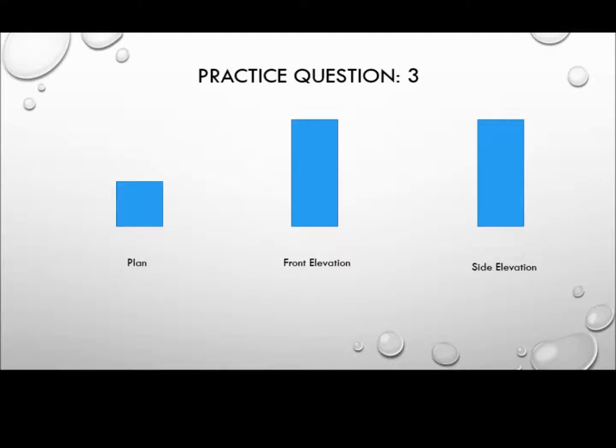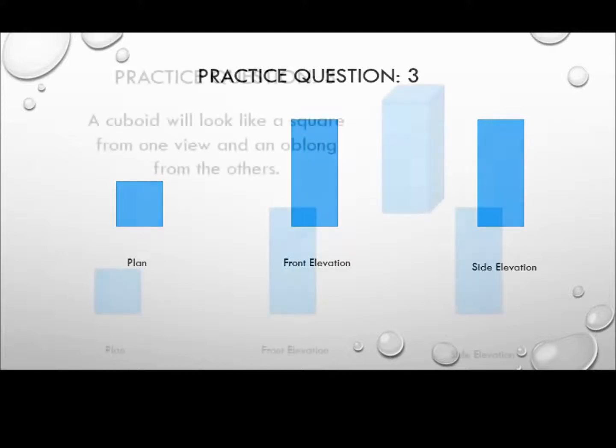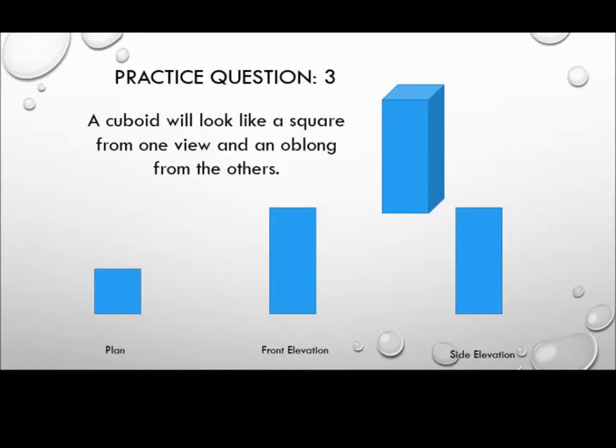What three-dimensional object are we looking at here? A cuboid will look like a square from one view and an oblong from the others.